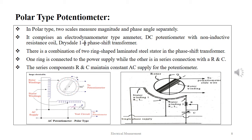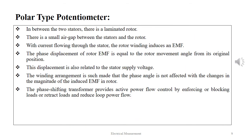There is a combination of two ring-shaped laminated steel stators in the phase shift transformer as shown below. One ring is connected to the power supply while the other ring is in series connection with the R and C component. The series components R and C maintain constant AC supply for the potentiometer. In between the two stators, there is a laminated rotor. There is a small air gap between the stators and the rotor.